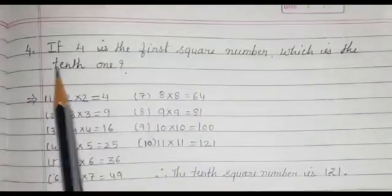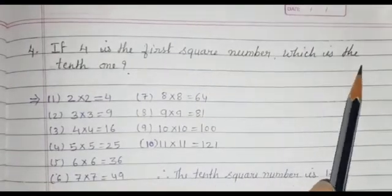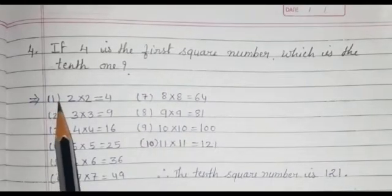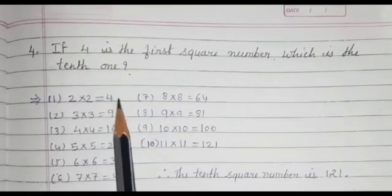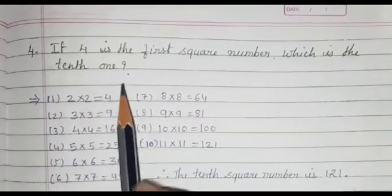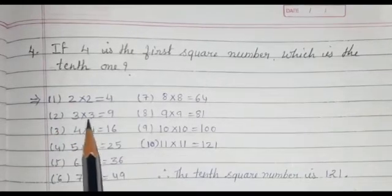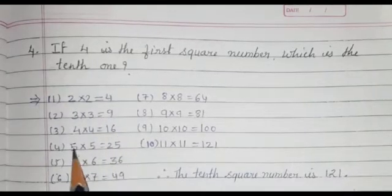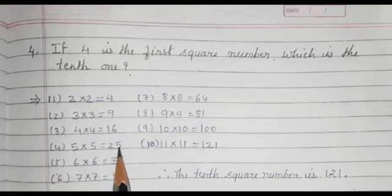Question number 4: If 4 is the first square number, which is the 10th one? The first square number is 4 (2×2). The second is 3×3=9. Then 4×4=16, 5×5=25, 6×6=36, 7×7=49, 8×8=64, 9×9=81, 10×10=100.